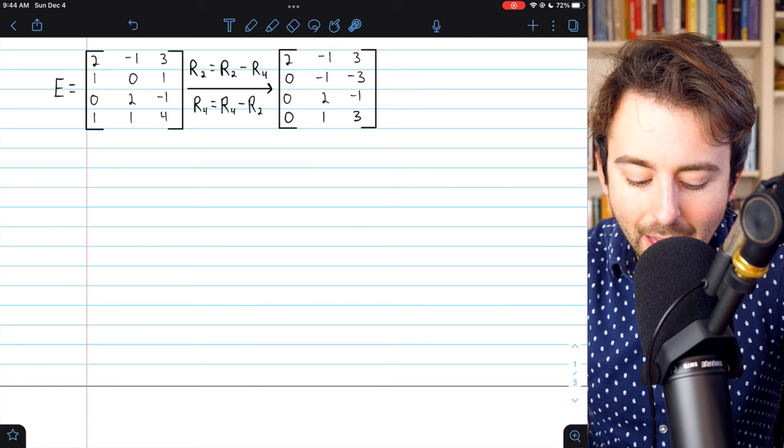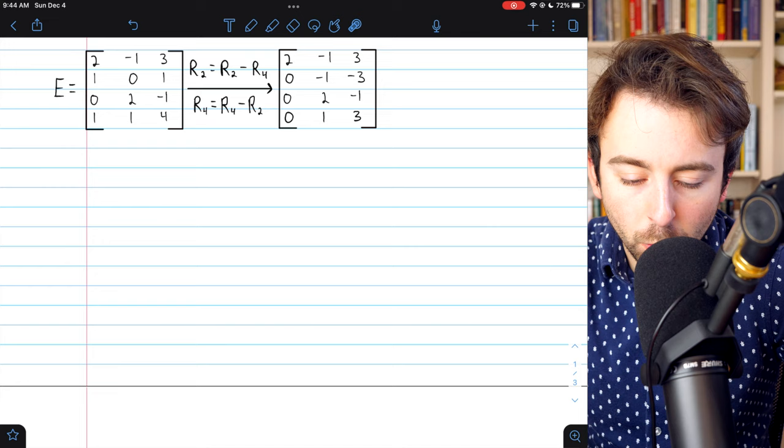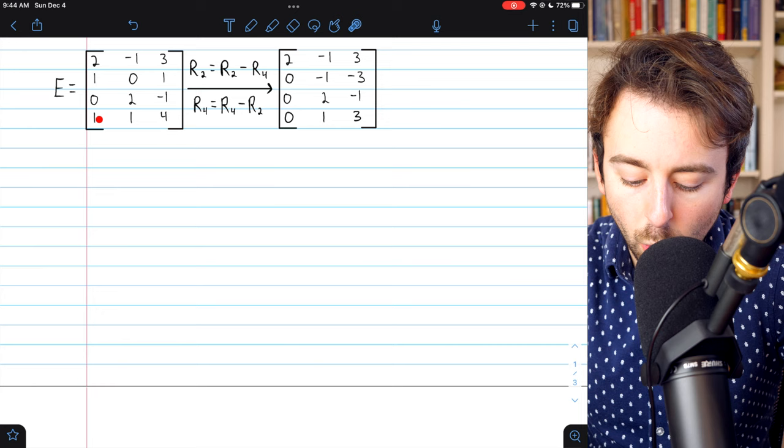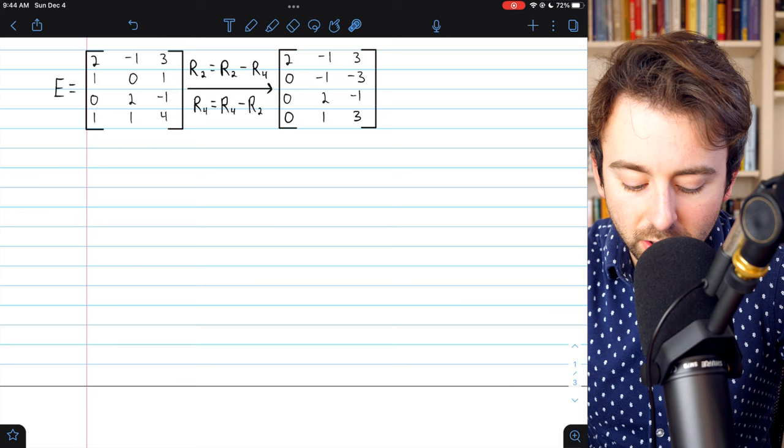We want to make the entries below each leading entry equal to zero, so below this two, we want only zeros. To get that, we'll set row two equal to row two minus row four, so those ones will cancel out. To get rid of this one, we will subtract row two from row four, to again cancel out the ones. That gets us here.